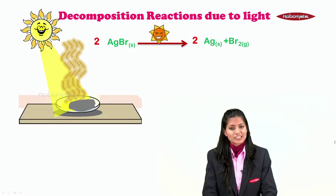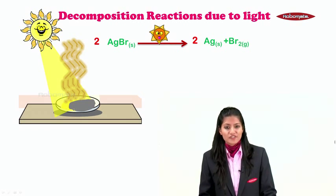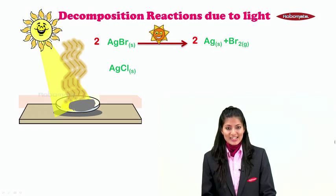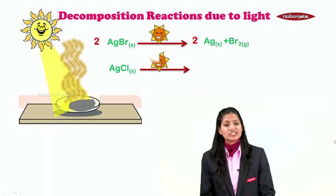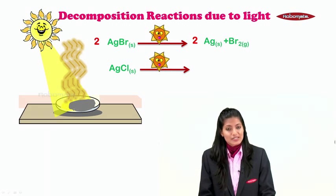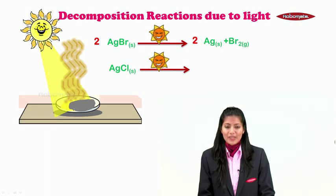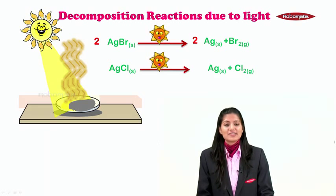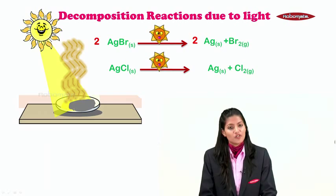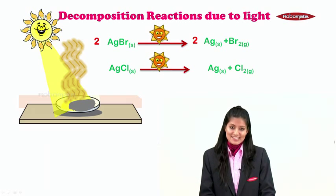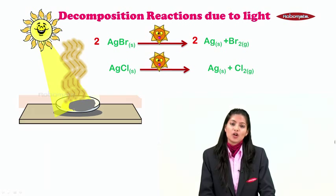Now let us consider one more similar kind of reaction, that is a reaction of AgCl when it is exposed to sunlight. When AgCl, a white colored substance, is exposed to sunlight, similar kind of observations were made: formation of grey colored substance along with release of vapor, and that grey colored substance was again silver and the vapors are of chlorine.